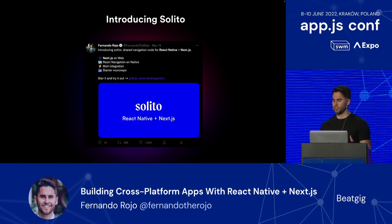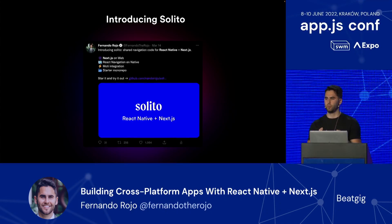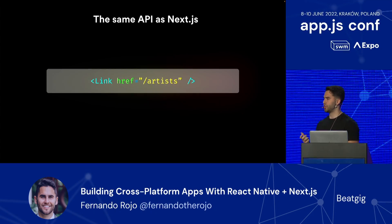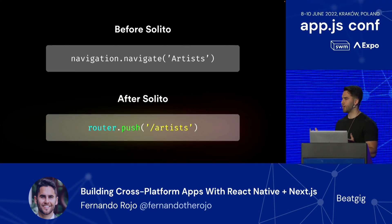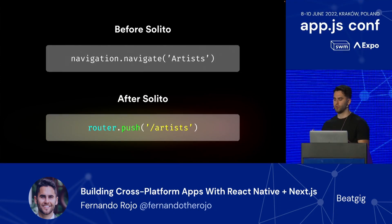Solito lets you share navigation code across React Native and Next.js with the exact same API. It uses Next.js router on web and React Navigation on native, and it never crosses over between the two — you're never importing Next.js code on native or vice versa. This is all possible thanks to a recent feature from React Navigation with a great linking config, so all of your linking on the native side is handled with a single variable. Solito has the same API as Next.js, so if you've ever used Link or useRouter from Next.js, this will look very familiar. Solito replaces navigation.navigate with screen names altogether and forces you to always use URLs, which is much more scalable and creates a strict contract between developers and users.